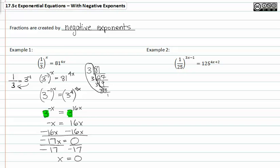Once again in example two, I have a fraction with 25 in the denominator. This could be rewritten as 25 to the negative 1 all raised to the 3x minus 1 equals 125 raised to the 4x plus 2. Now that I know I can bring my base or denominator up to create a base, I see that 25 is not in its prime factored form.